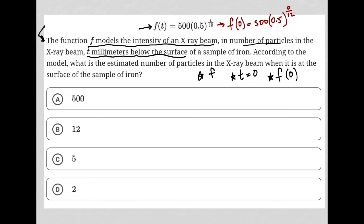Of course, 0 divided by 12 is just 0. All right, so we have 0.5 to the 0 power. Any number to a 0 power is just 1. So really, we have 500 times 1, which is 500. So this all equals 500.